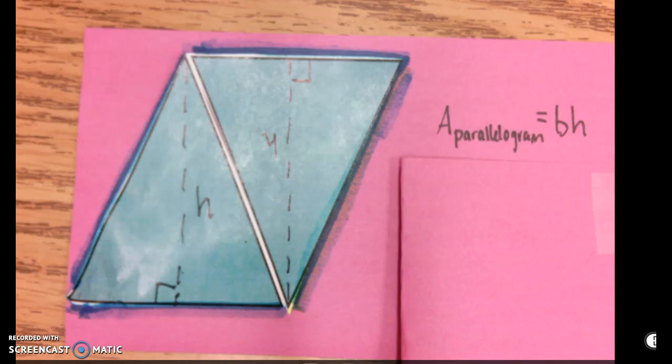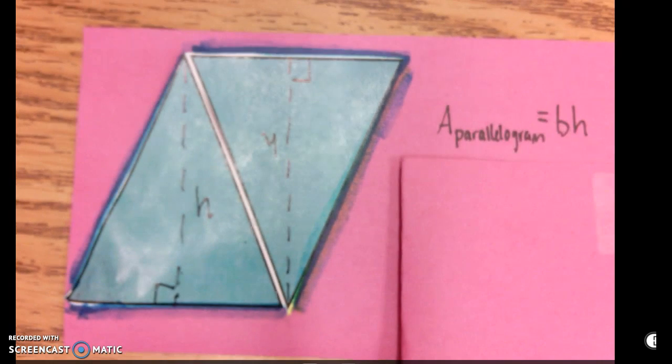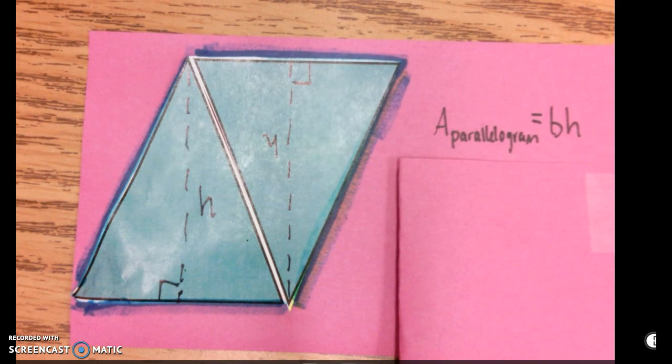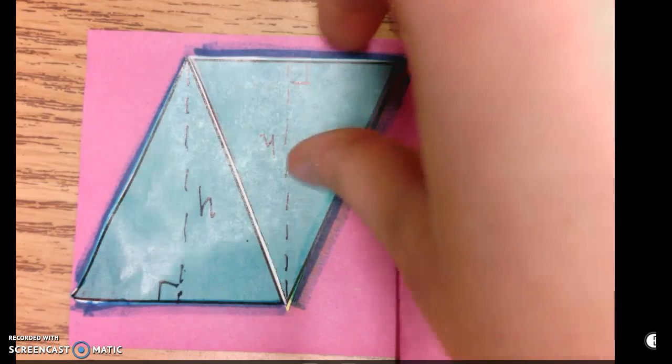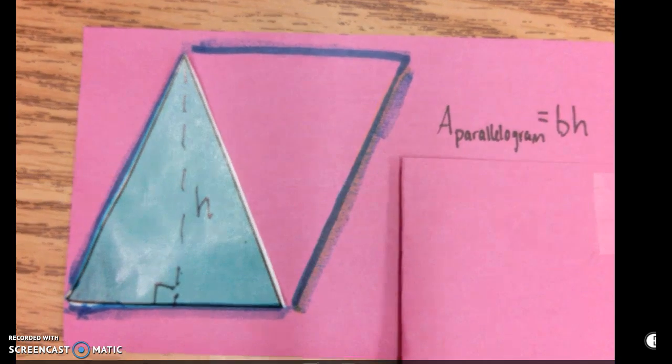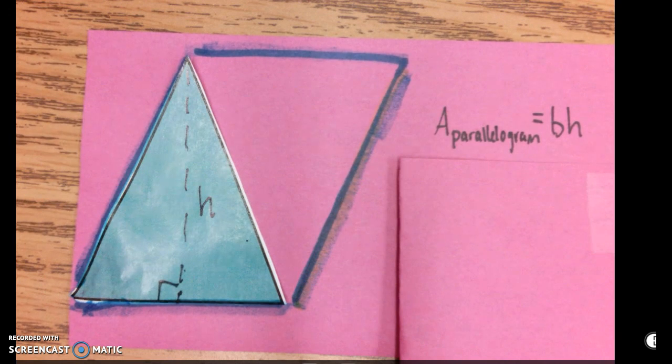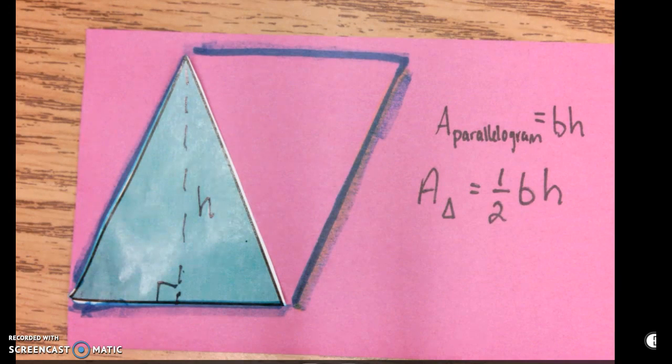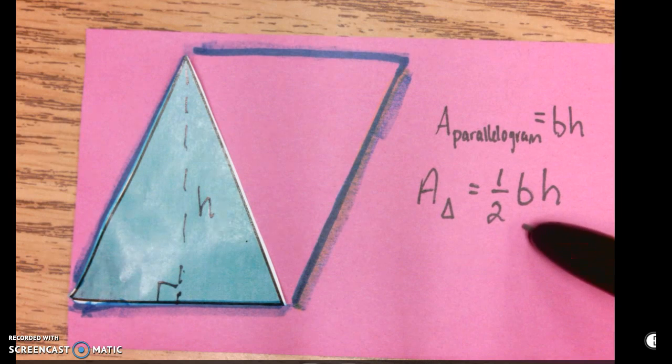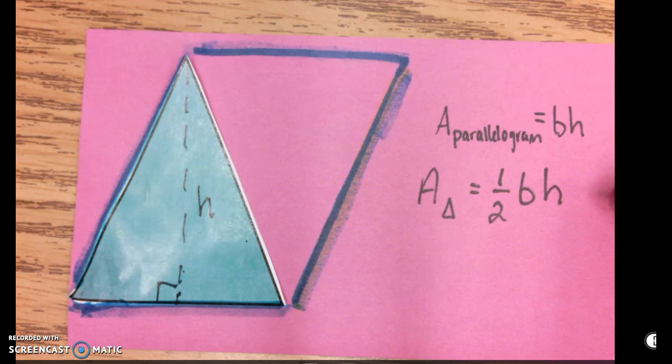The formula for area of a triangle is actually related to the formula for area of a parallelogram, and that's because the area of a triangle is always half the area of a parallelogram with the same base and height. So the formula for area of a triangle is one-half its base times its height. So you can see the relationship there.